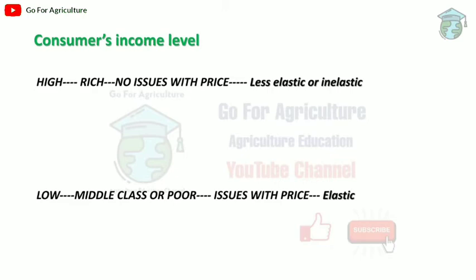For low-income consumers — middle class or poor — price changes matter a lot. If the price is high, they won't buy; they literally wait for the price to come down. If the price is low, demand goes up. So for low income, demand is elastic. This also depends on consumer preference — as in the earlier December-January phone example, not buying due to lack of money falls under low income level.